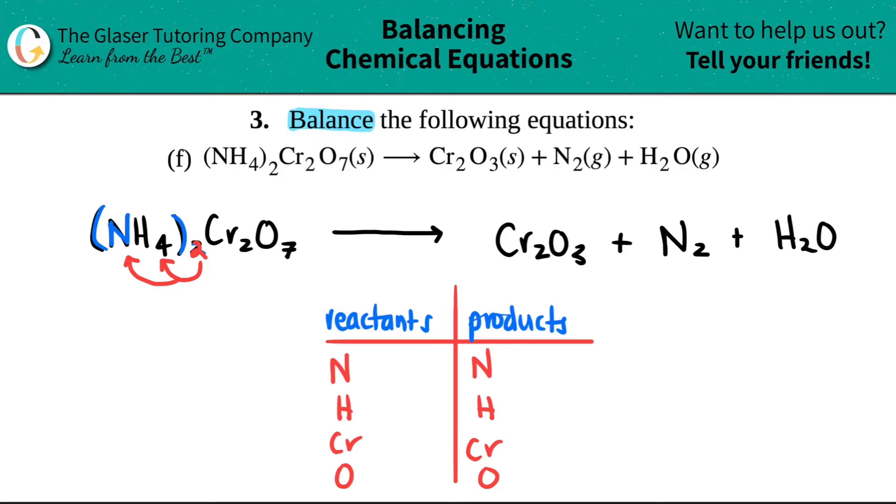So I really have...there was one nitrogen here. One times two is two. I really have two nitrogens. And let's use that same rule for hydrogen. There were four hydrogens here, but times by two, there are eight hydrogens.